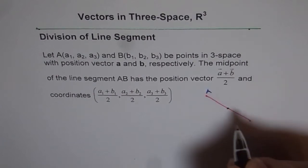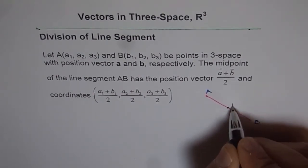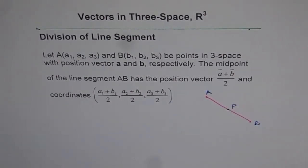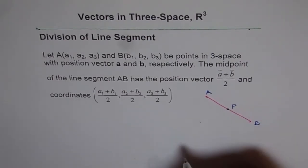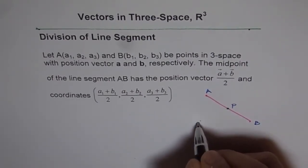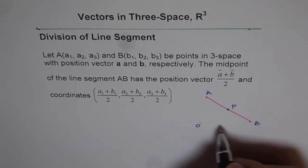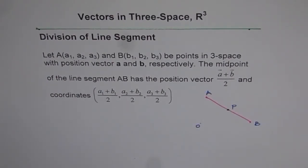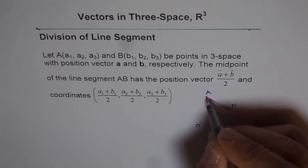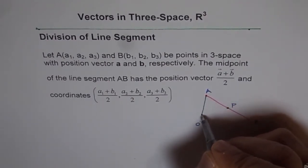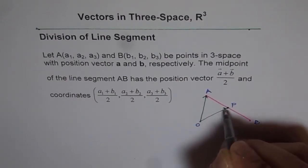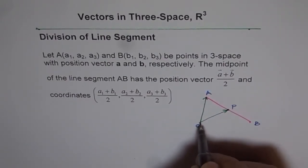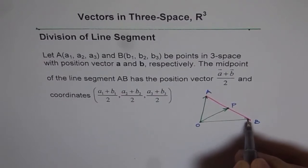Now we have A here, B and point P. To prove this, let us consider that somewhere we have origin O. Now with origin, let's connect these points. So if I connect these points with the origin, I get the position vector. So we get position vector OA and that becomes position vector OP and this becomes position vector OB.